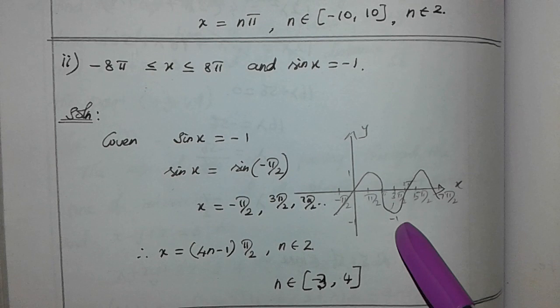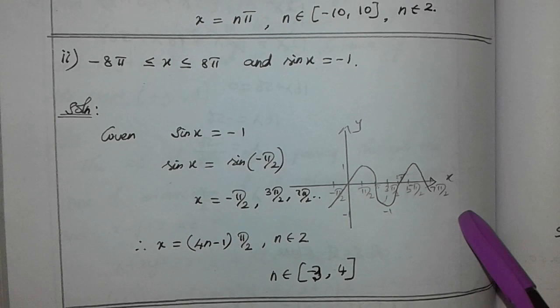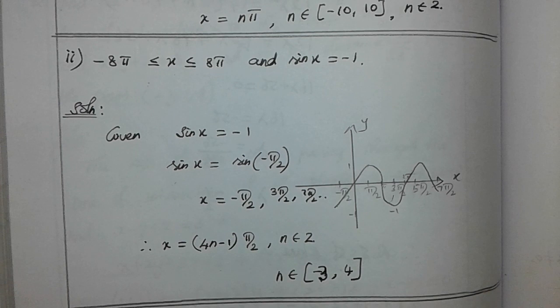Part ii: minus 8π ≤ x ≤ 8π and sin x equals minus 1. If you say 3π by 2, as it is equal to... complete revolution...